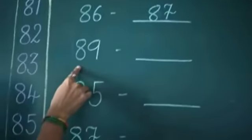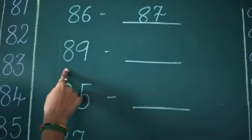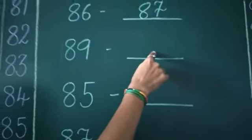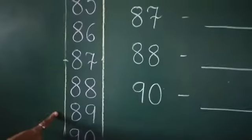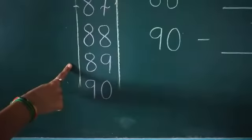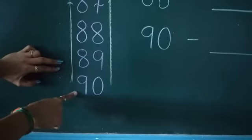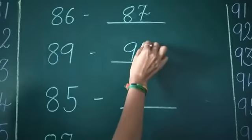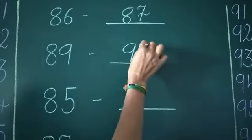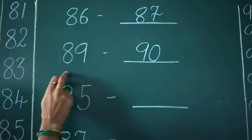Next, number 89. Which number comes after? Look at here — number 89. Which number comes after? So number 90 comes after number 89.